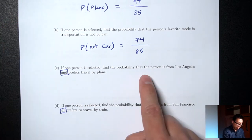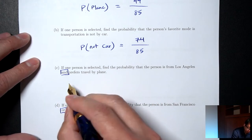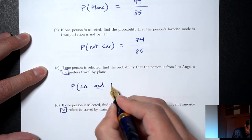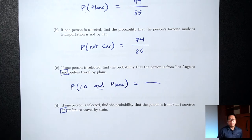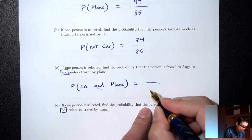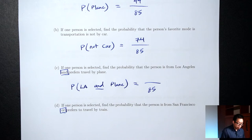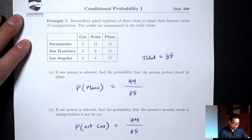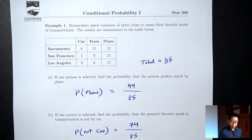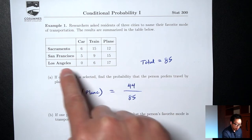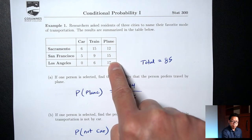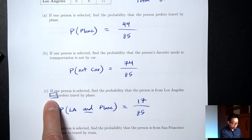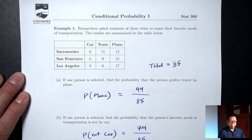Part C: I want the probability that the person is from Los Angeles and prefers travel by plane — P(LA and plane). The bottom is still the total: 85. In probability, the word 'and' means I want people who are from Los Angeles and at the same time prefer plane — they need to satisfy both requirements simultaneously. That would be these 17 people, who are from Los Angeles and said plane was their favorite. So the answer is 17/85. As a tip, when you're looking for 'and' probabilities, it should just be a single number in your table.